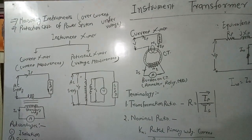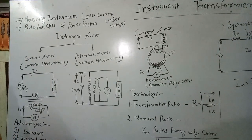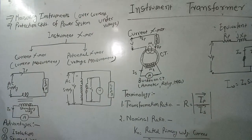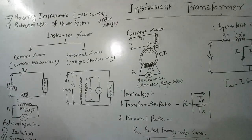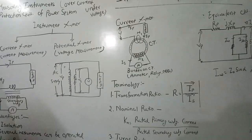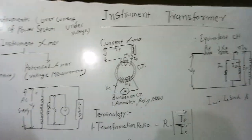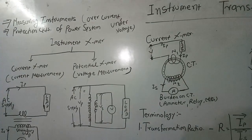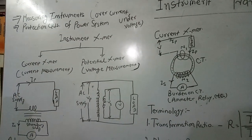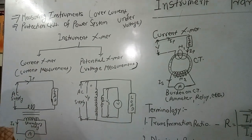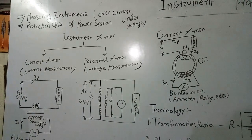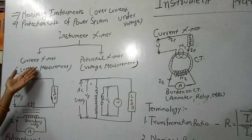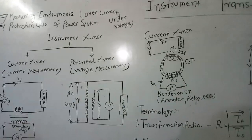It also protects the circuits of all power system equipment like alternators and generators which are connected to the load. As we know, load is fluctuating, which can affect the power system or equipment connected to the load. So it also protects our power plant. Instrument transformers are basically divided into two parts: current transformer and potential transformer.